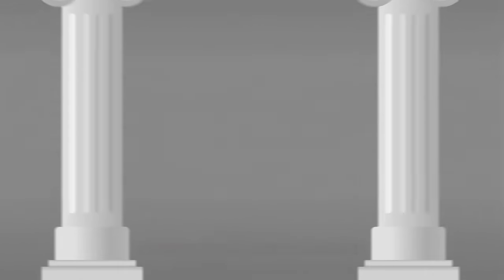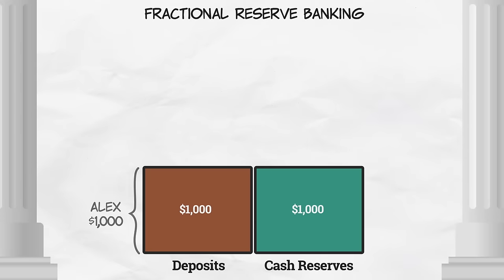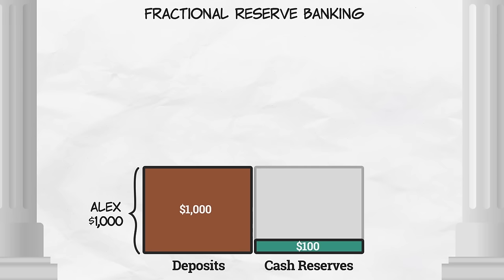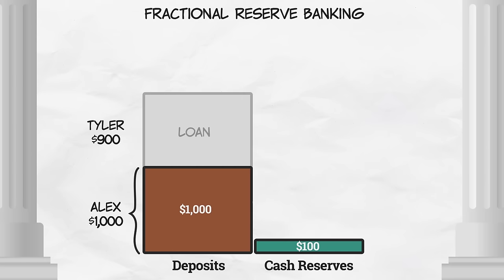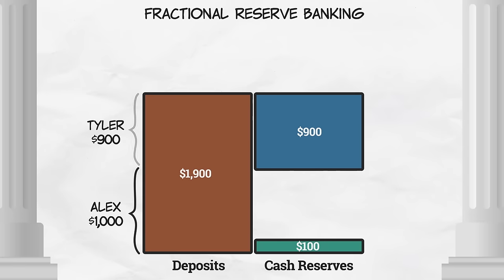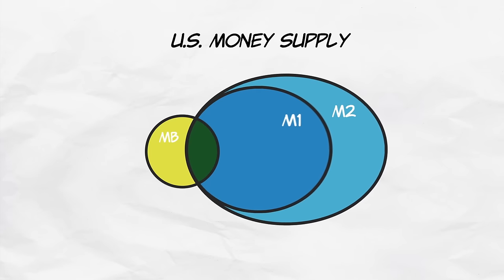Because of fractional reserve banking, the banking system has a big effect on the supply of money. Suppose that your bank keeps 10% of your $1,000 deposit, or $100, as reserve, and lends out 90%, or $900, say to Tyler, who's interested in starting a business. That $900 loan is credited to Tyler's checking account. So now there's $1,900 in new deposits. And since checkable deposits are part of the money supply, the money supply has increased.